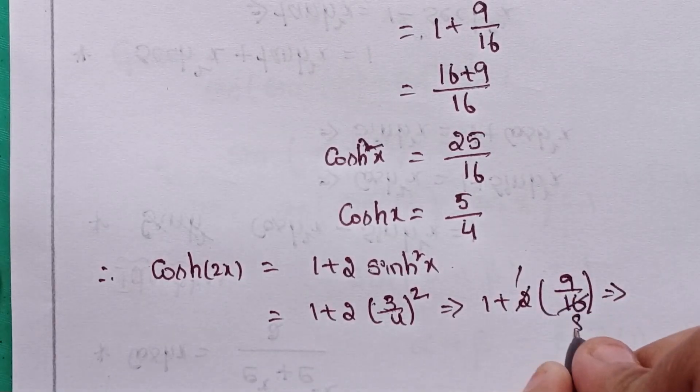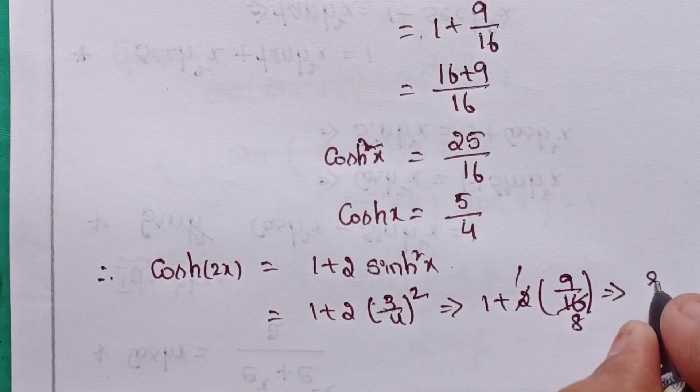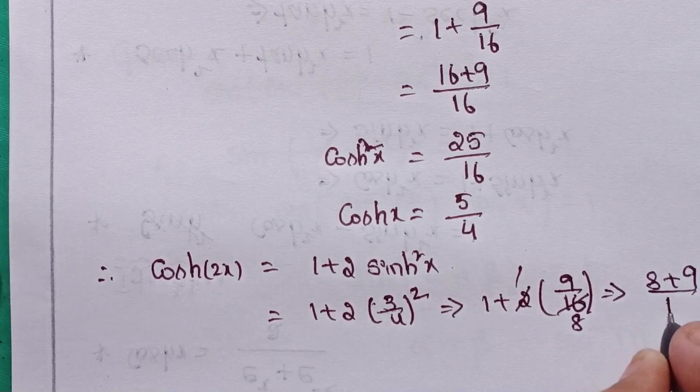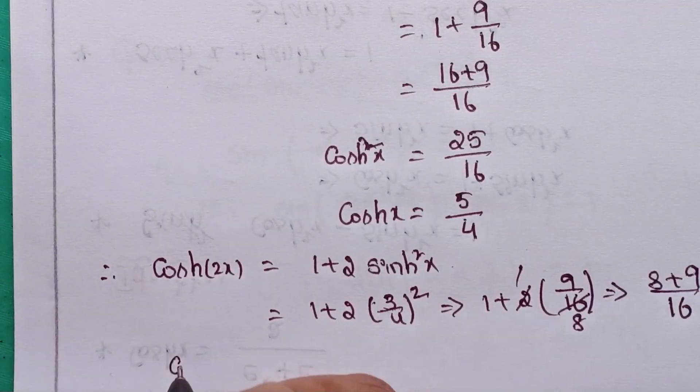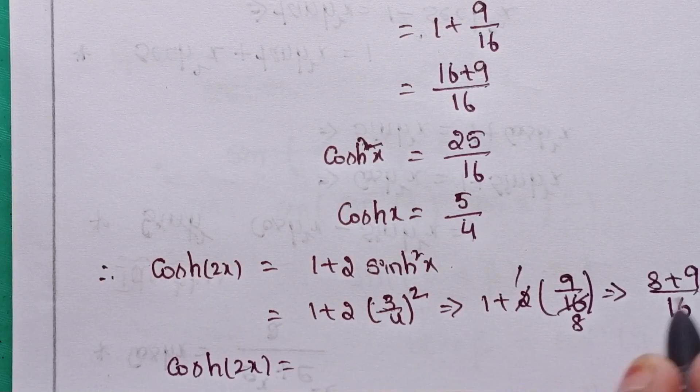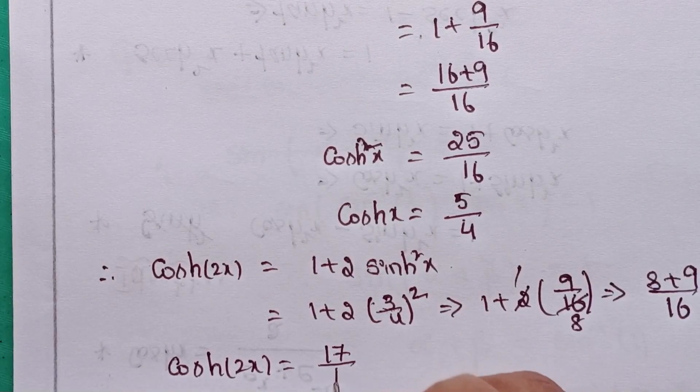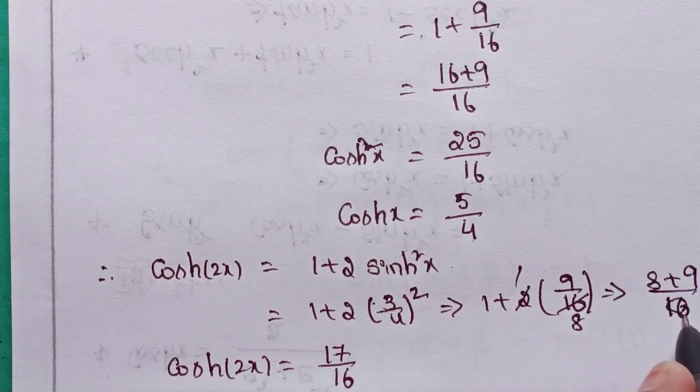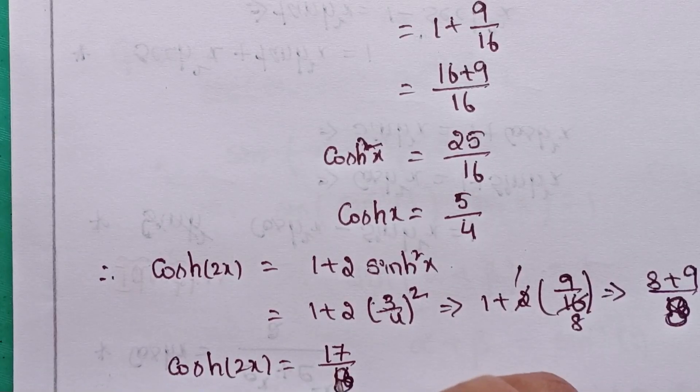2 and 16, cross multiplication gives 8. So 8 plus 9 by 16. Therefore, cosh of 2x value is 17 by 16. Sorry, not 16, 8. The denominator is 8.